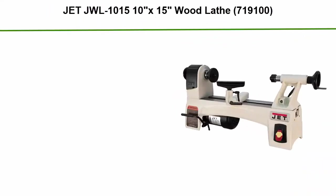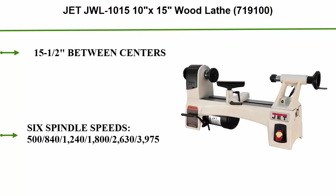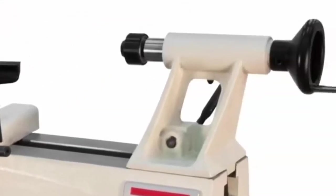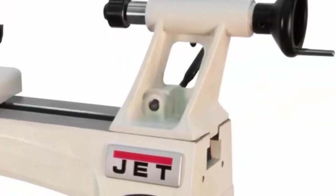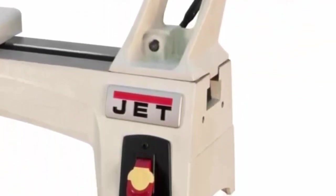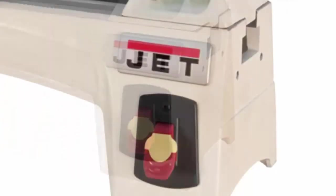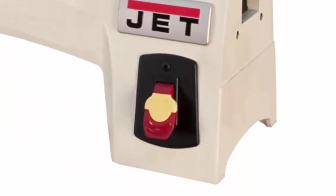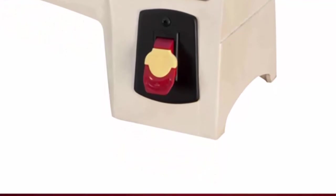Top 5: JET JWL-1015, 10x15 wood lathe (719100). 15 and a half inches between centers. 6 spindle speeds: 500, 840, 1240, 1800, 2633, and 3975. Integrated 24-position indexing. Improved tensioning system, easier access to belts. Increased rigidity, wider bed weights.